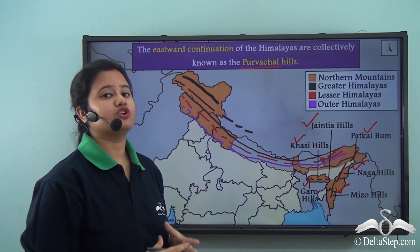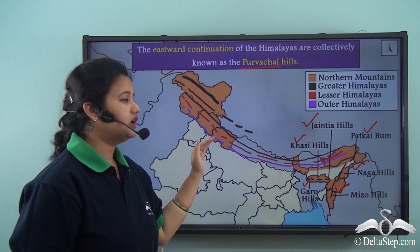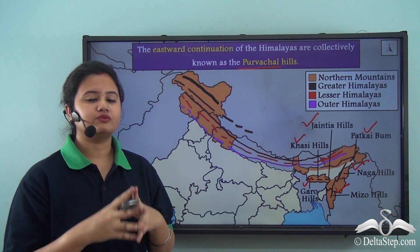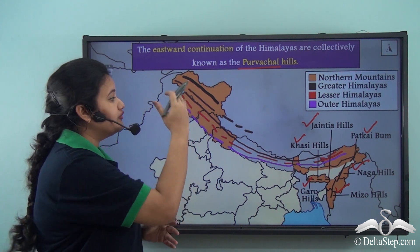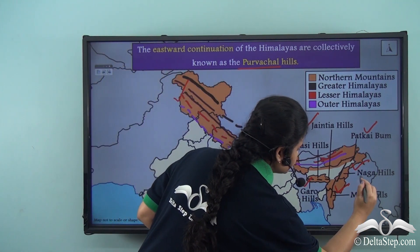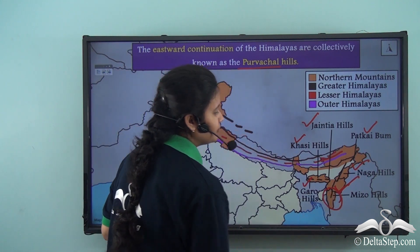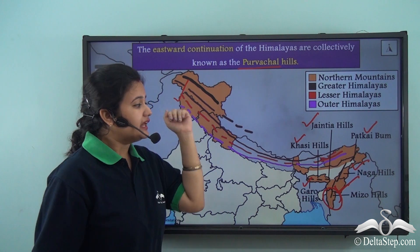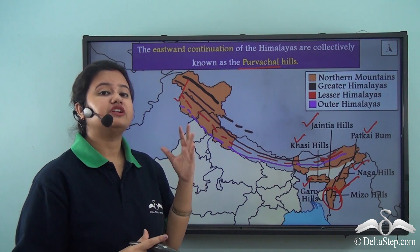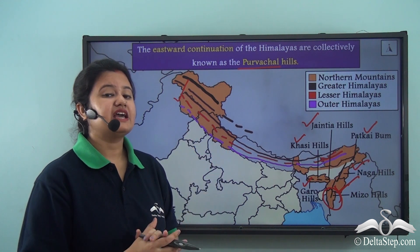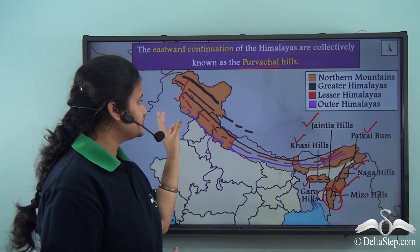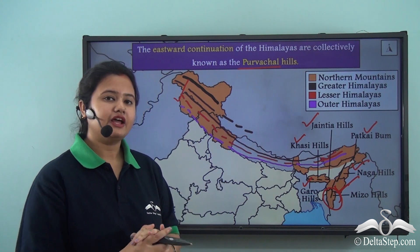The average elevation of the Purvachal hills is comparatively lower than that of the western stretch of the Himalayas. The northern mountains or the Himalayas extend over a wide region from Jammu and Kashmir in the west till the northeastern states of Tripura and Mizoram. This entire region of the Himalayas can be separated into several parts, demarcated by the rivers flowing through them.